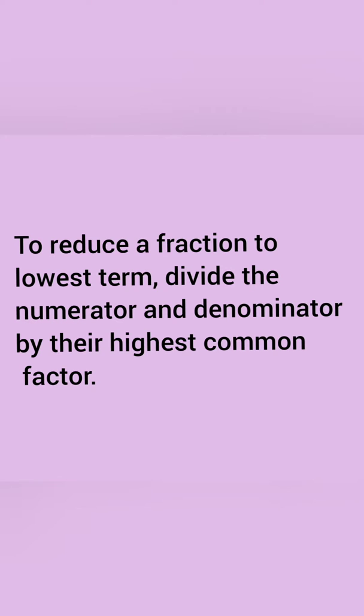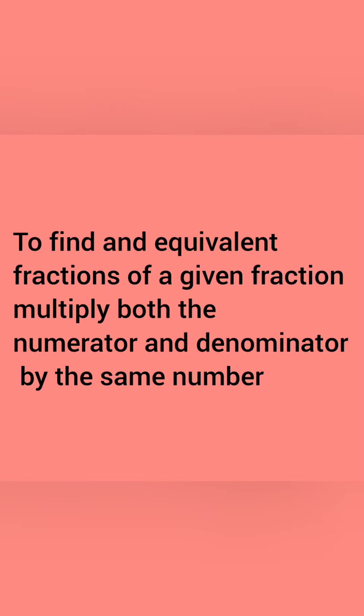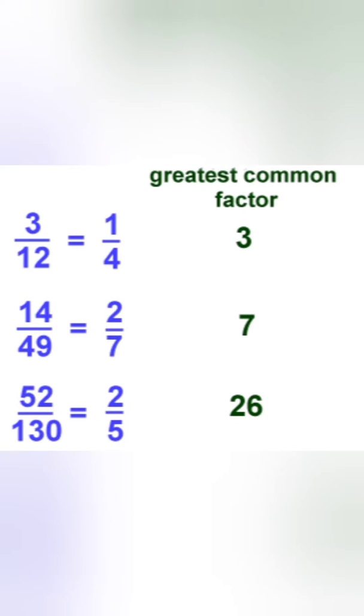As we know, how to find an equivalent fraction, it was by multiplying the same number in the numerator and denominator. But here, we are going to divide the numerator and denominator by the same common factor, which is the greatest common factor, which is divisible by both the numbers.